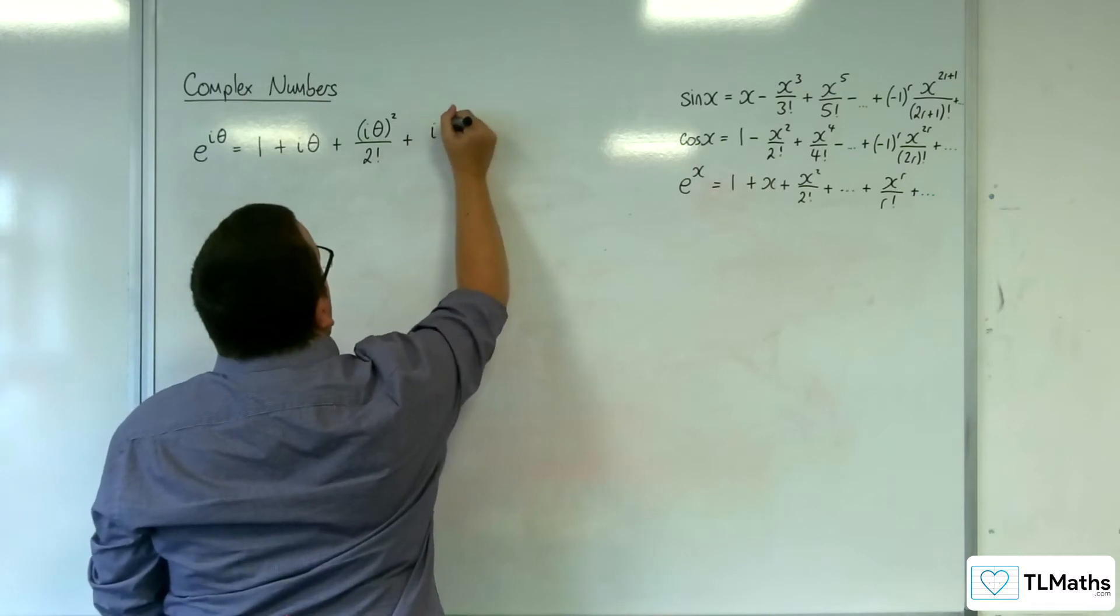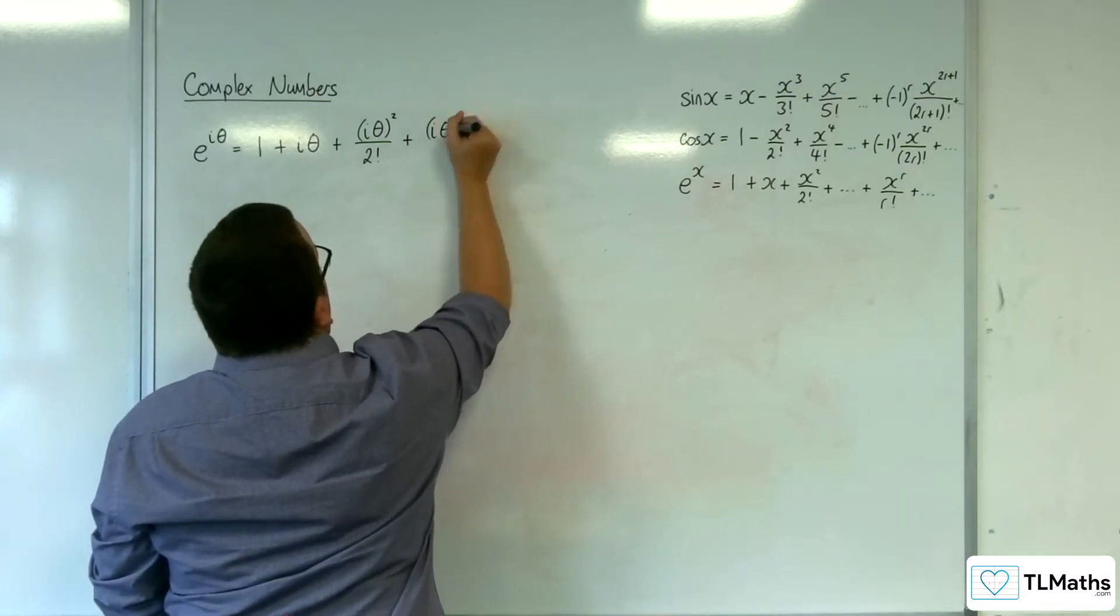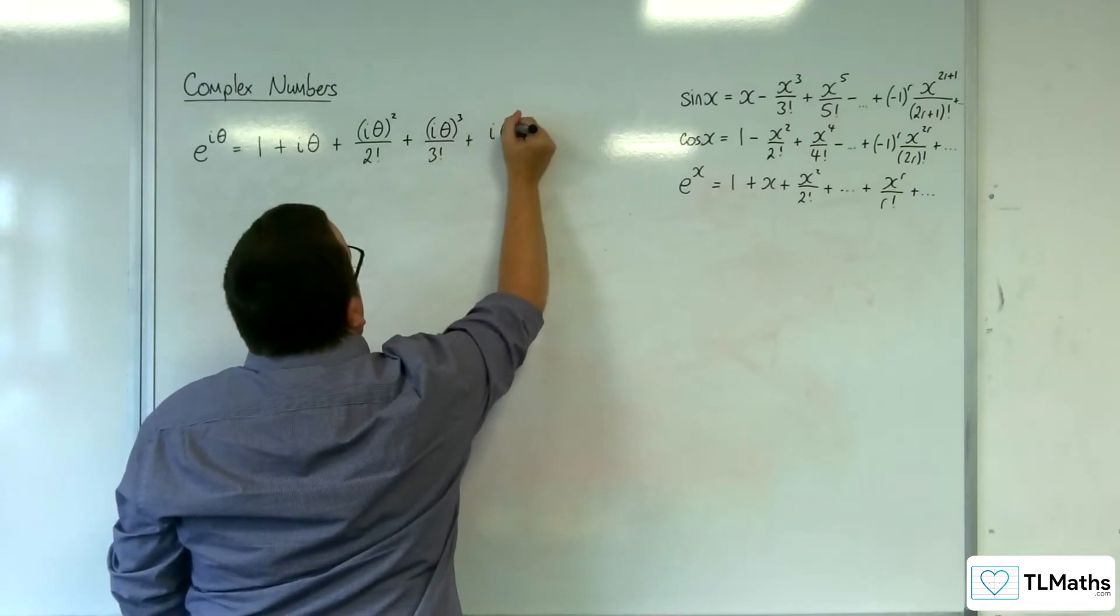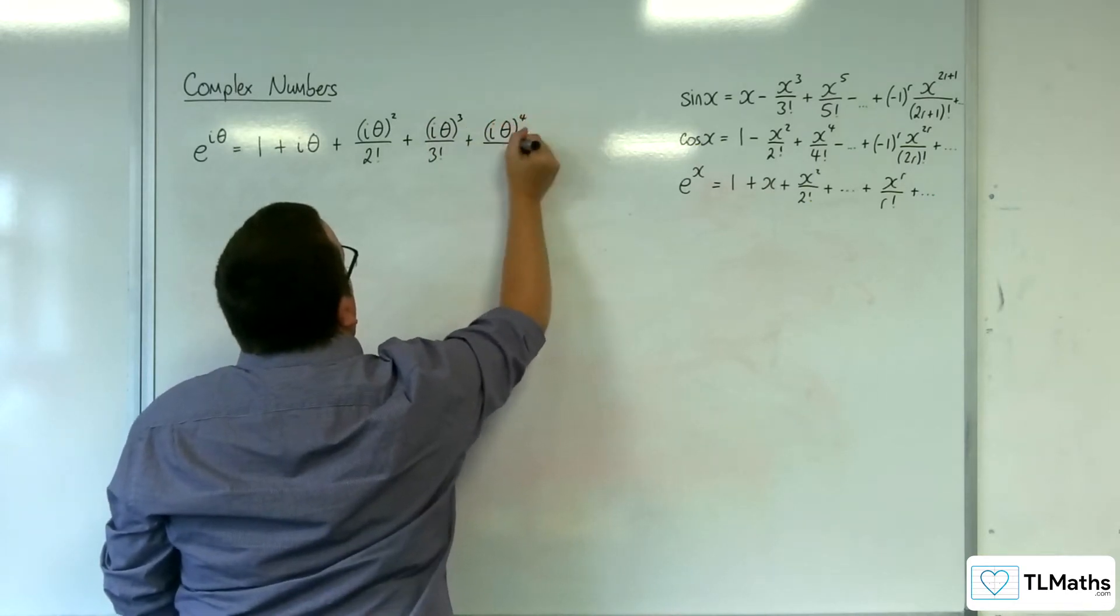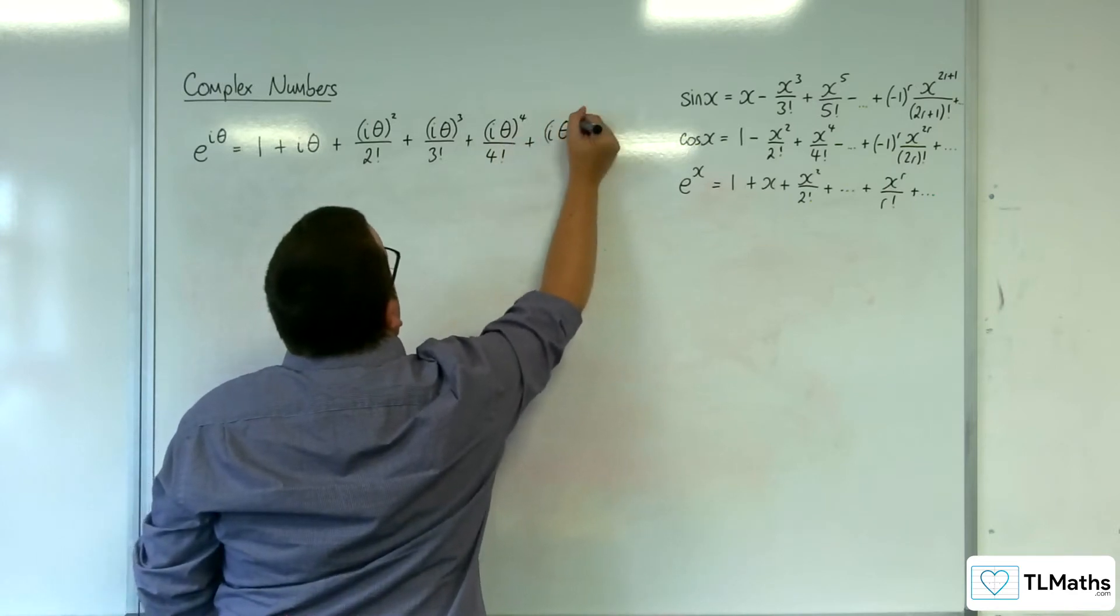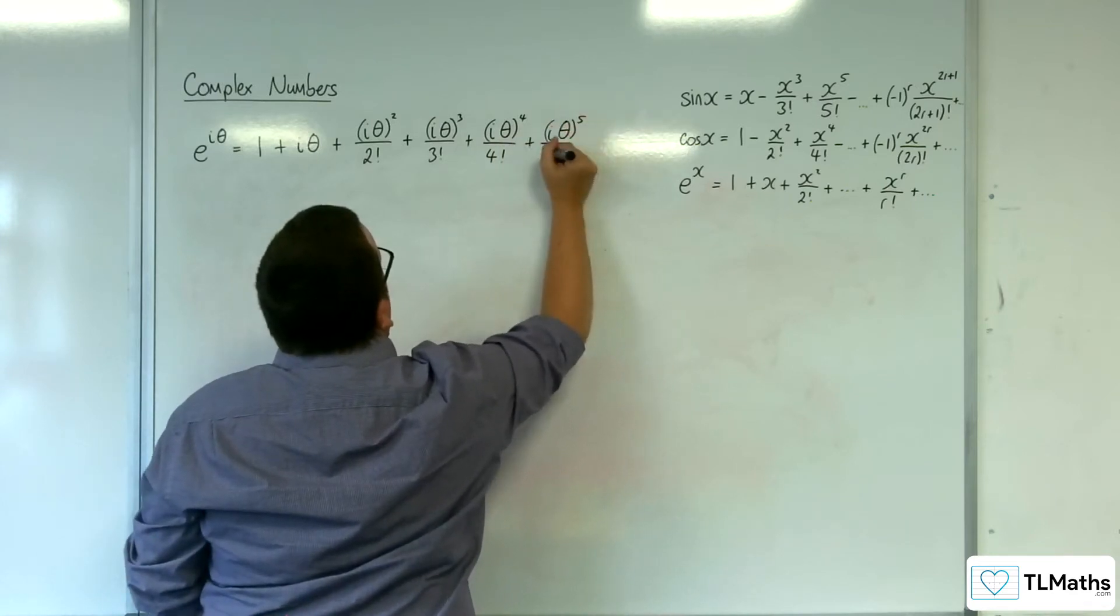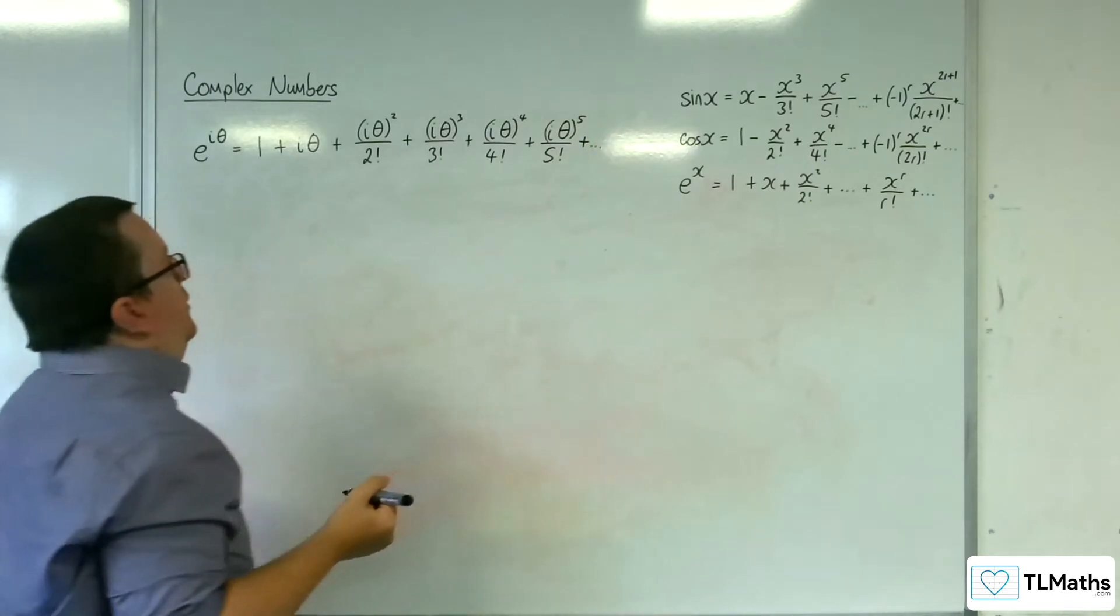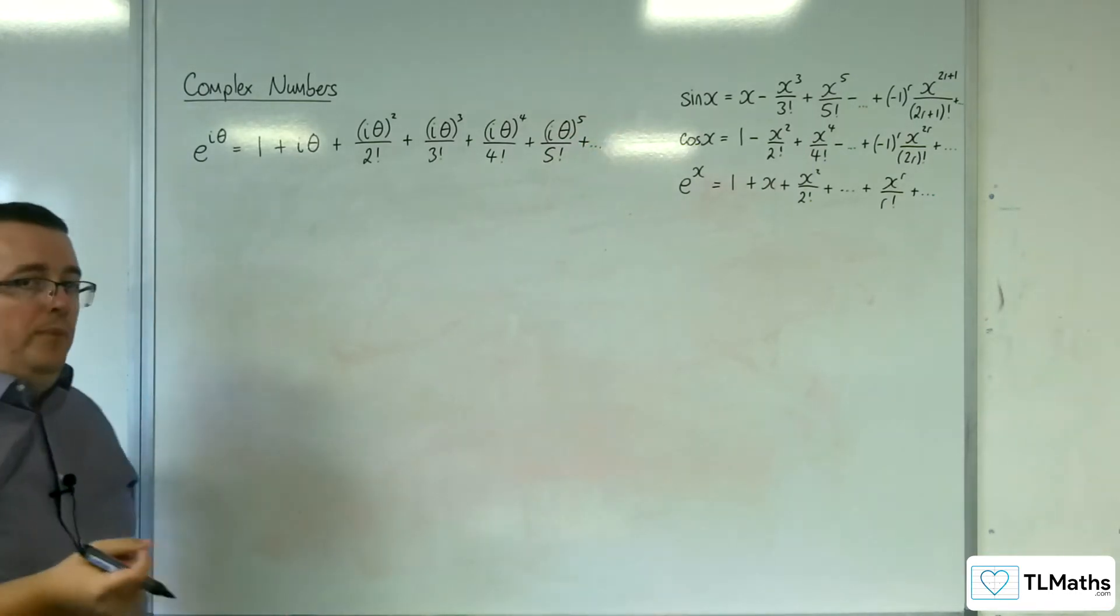So let's keep going. We'll have i theta cubed over 3 factorial. We'll have i theta to the 4 over 4 factorial. We'll have i theta to the 5 over 5 factorial, plus dot, dot, dot, on and on and on.